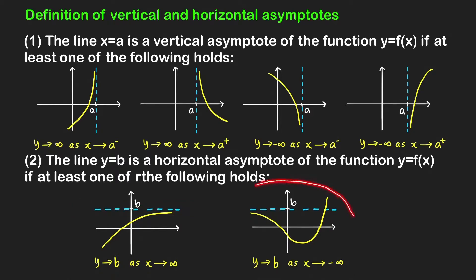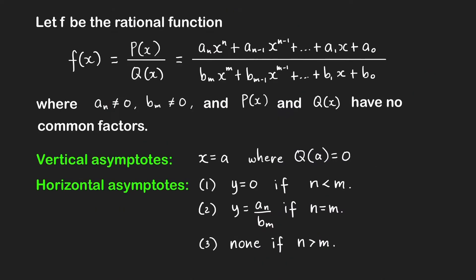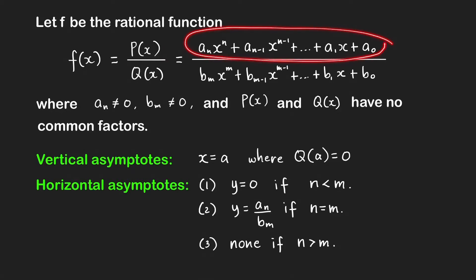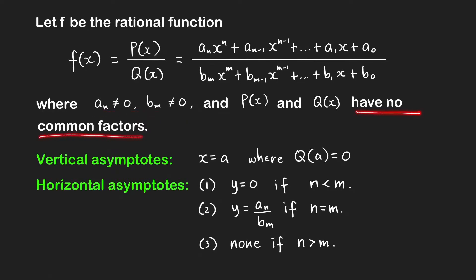Similarly, we also assume that the y values are not equal to b for sufficiently large negative x. Now let us discuss a shortcut for finding these asymptotes for any given rational function. A rational function f of x is a ratio of two polynomials p of x and q of x, where the leading coefficients are not equal to zero, and we assume the numerator and denominator have no common factors. If there are common factors, cancel them first and simplify the rational expression.